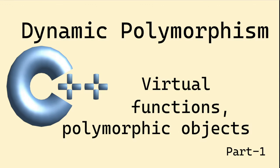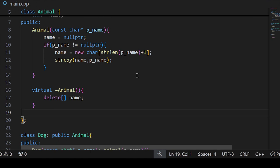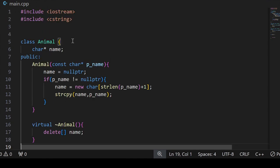In this dynamic polymorphism sub-series, in part one, I will talk about virtual functions and polymorphic objects. A virtual function is a member function of a class which a derived class can overwrite. It allows an object to behave as a polymorphic object — an object which can take or assume different forms, exhibiting different behaviors. Let us learn more about virtual functions and polymorphic objects through coding.